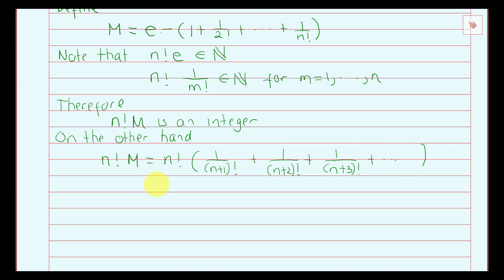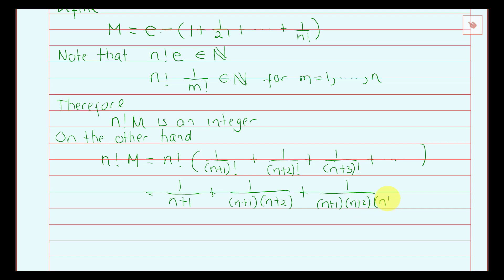Let's simplify. n factorial divided by n plus 1 factorial gives 1 over n plus 1. Then n factorial divided by n plus 2 factorial — we cancel the n factorial on the bottom and we still have n plus 1 times n plus 2 remaining. For the third term, n factorial cancels and we still have n plus 1 times n plus 2 times n plus 3, and so on.